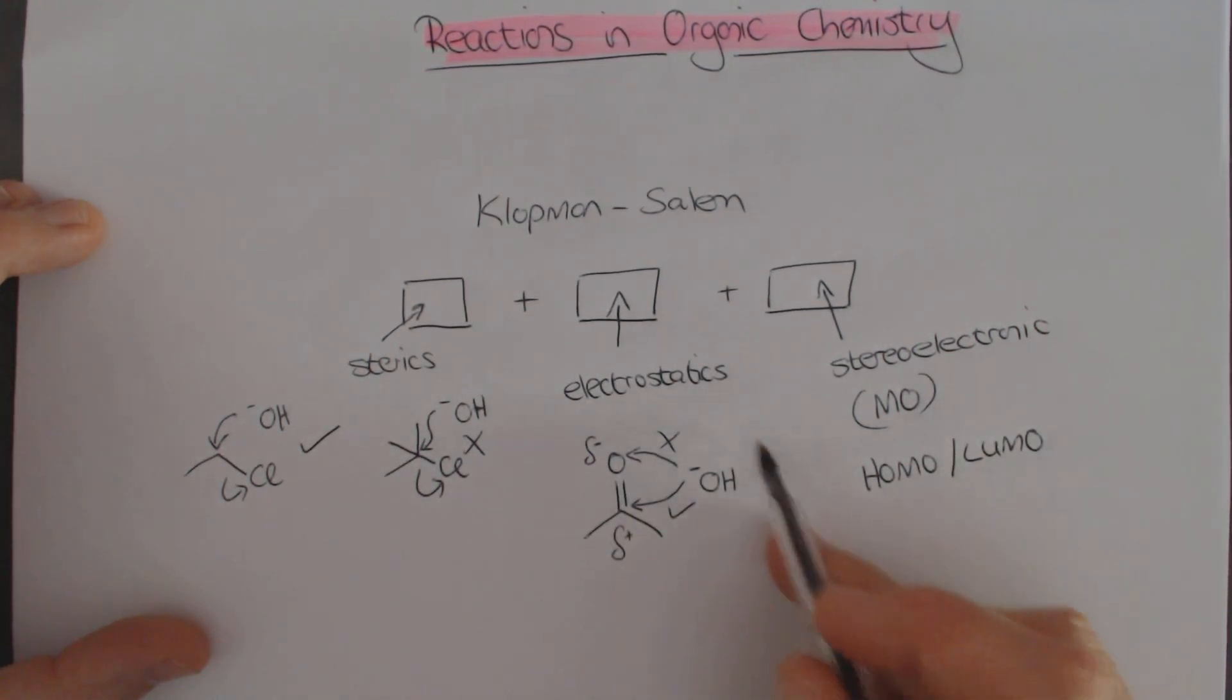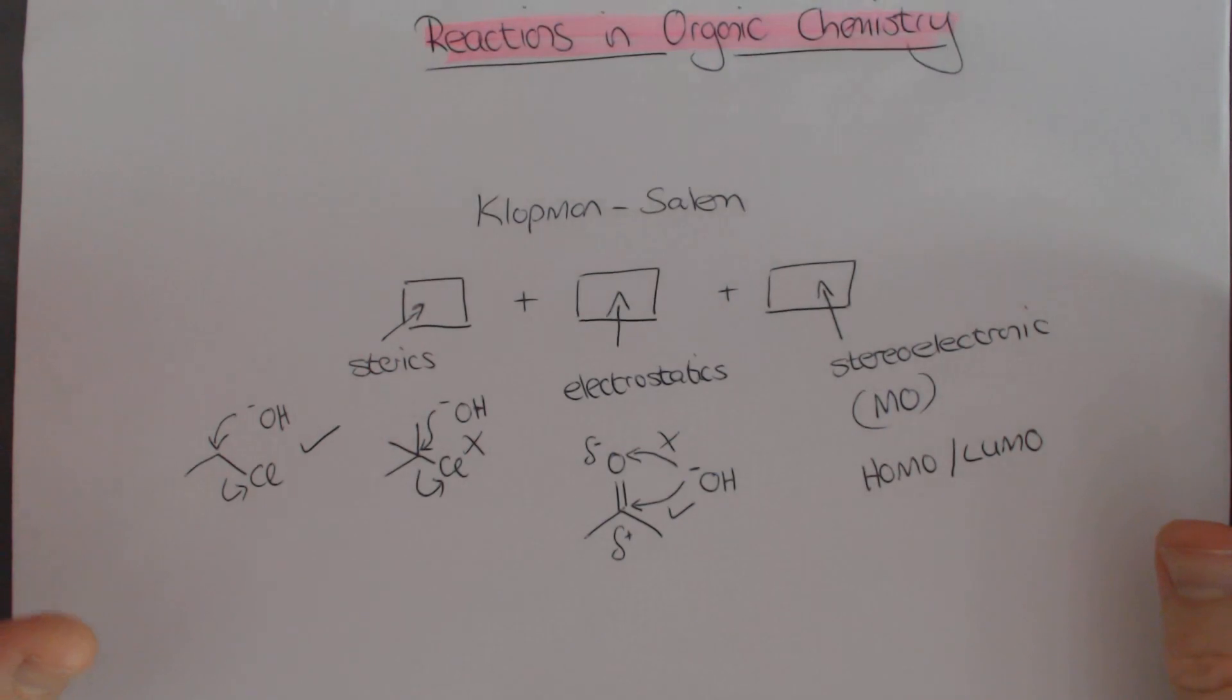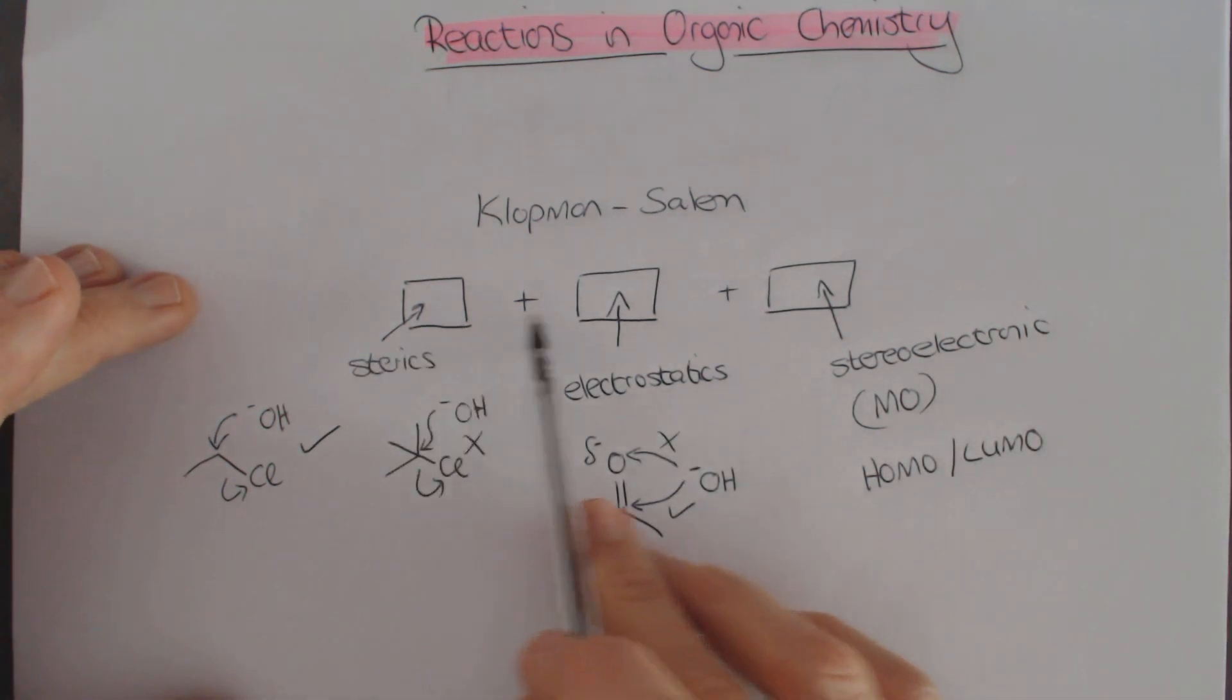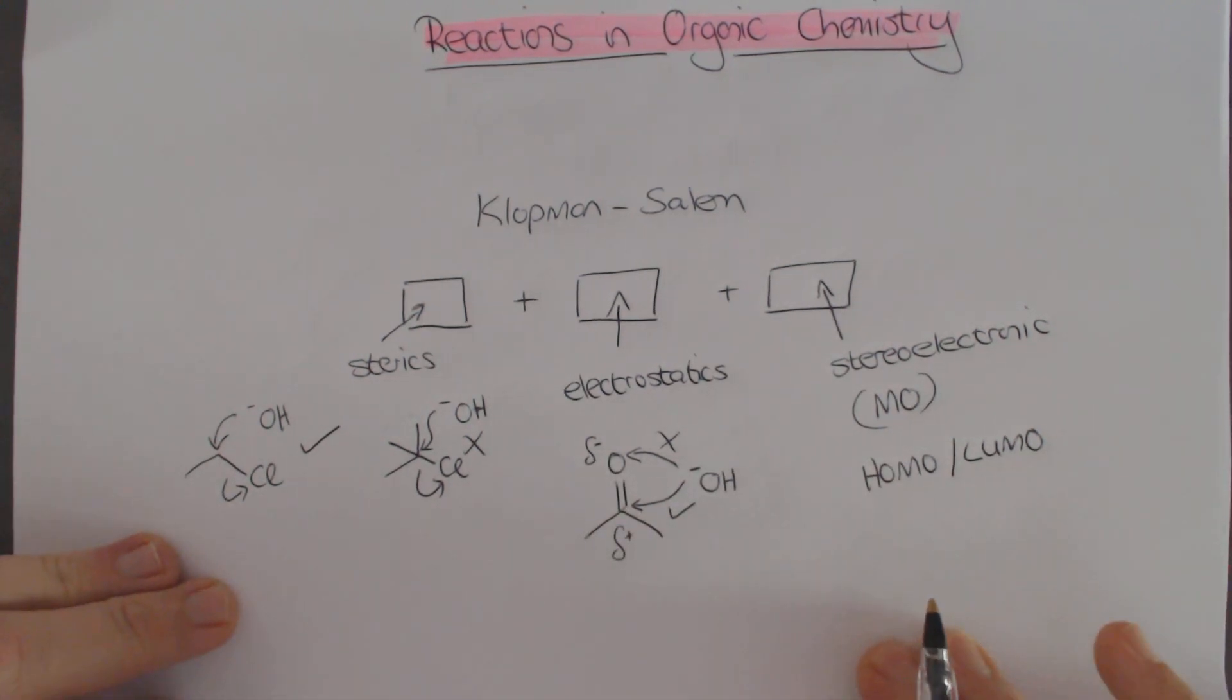The same reaction can be looked at over here. The nucleophile is the hydroxide with negative charge and lone pairs of electrons. Lone pair of electrons add to the LUMO, which is the pi star antibonding orbital of this carbonyl of the ketone. So all of these things come together. I should be able to give you examples where you can look at them and say what are the features. In all reactions, these features may appear to a greater or lesser extent.